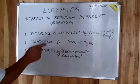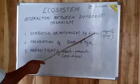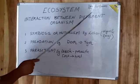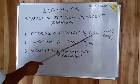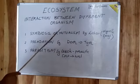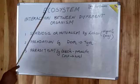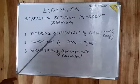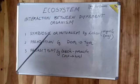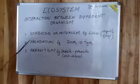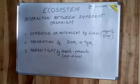For example, when algae and fungi live together, it is called lichen, and both of them benefit from this relationship.